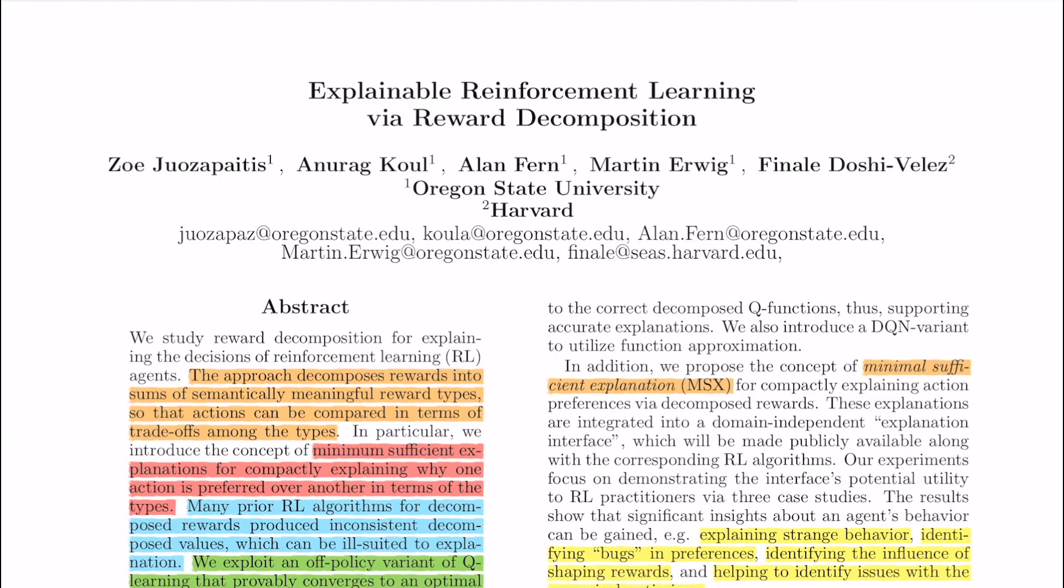Let's take an example. A driver RL agent can have reward sourcing from different factors like safety, time taken to reach the goal, the route taken, and so on. Then the explanation for choosing the action STOP instead of the action ACCELERATE can be: well I did this because the reward type SAFETY was more critical than the reward type TIME TO GOAL.